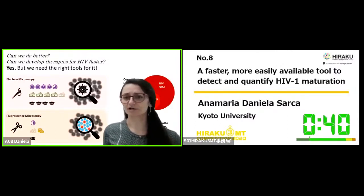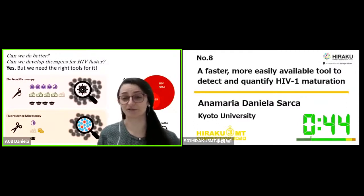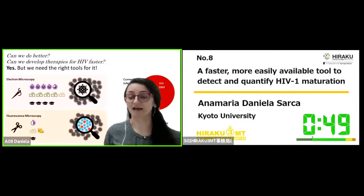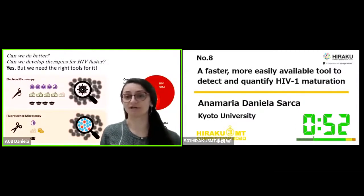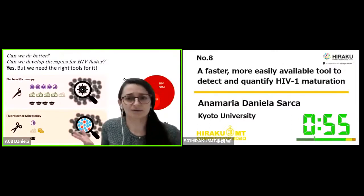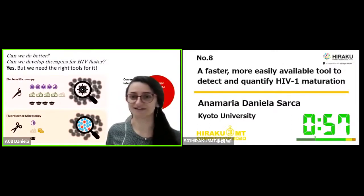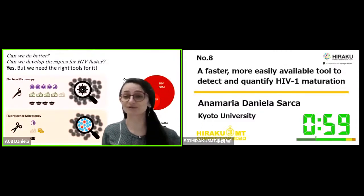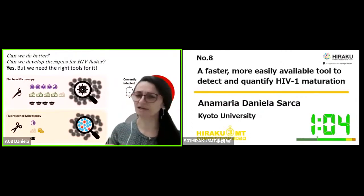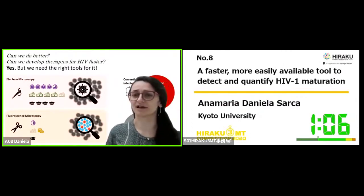Researchers discovered early on how important this step is and have developed many drugs to prevent HIV maturation. But as time passed, the virus became resistant and one by one, the drugs stopped working. So what's the problem? Just develop a new drug. Well, the problem is that we don't have very good tools to look at HIV maturation — we don't have the metaphorical scissors to quickly and swiftly dissect this step of the viral life cycle.